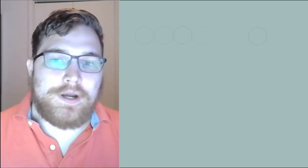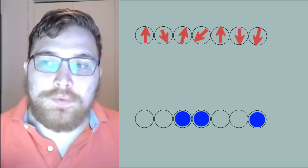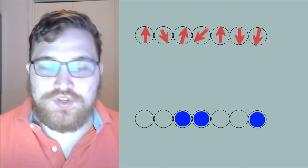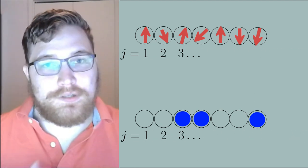Before we completely jump into it, let's motivate what we're trying to do here. Let's imagine two chains, one with spin one-half degrees of freedom and one with fermions. We will label the sites in each chain as j equals 1, 2 and so on to the capital letter L for length.